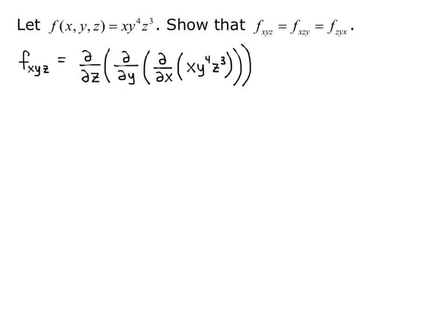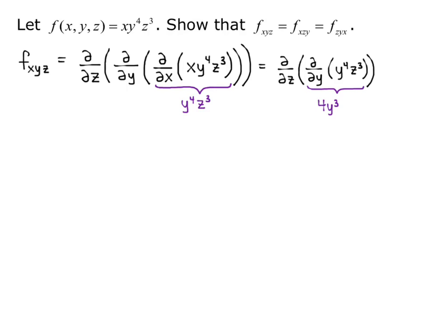We focus on the partial derivative of our original function with respect to x first. That gives us y to the fourth z cubed, because the partial derivative of x with respect to x is just 1, and the constant multiple y⁴z³ is what's left. Now we take the partial derivative with respect to y of y⁴z³, and we get 4y cubed times z cubed, because z cubed is like a constant multiple.